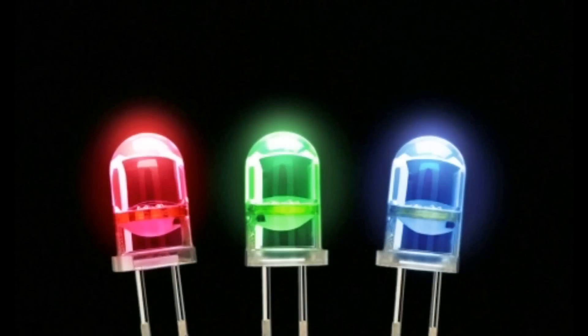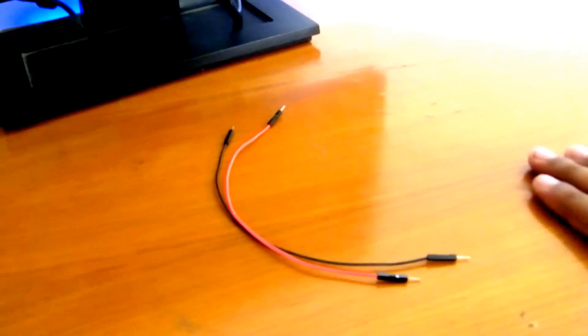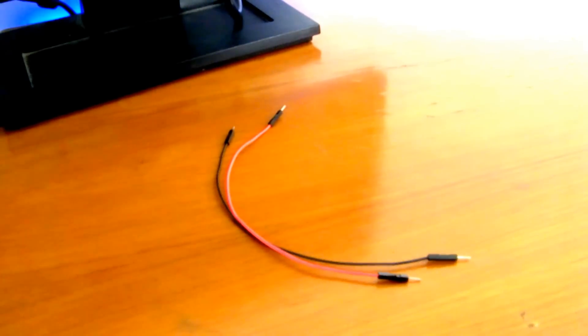You'll need a breadboard, an LED of course—I'm using a 5mm white LED—a 100-ohm resistor, and some wires. I'll be using breadboard jumper wires, but you can use any normal wires just stripped at the ends.